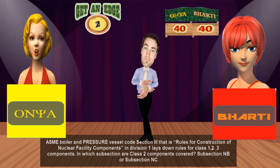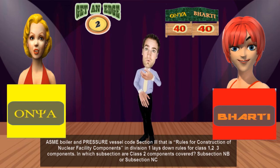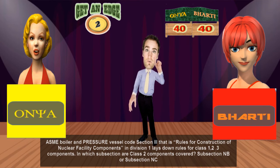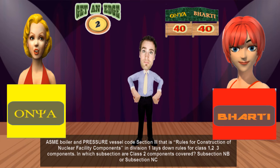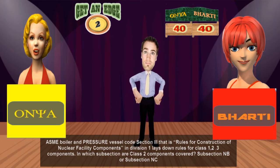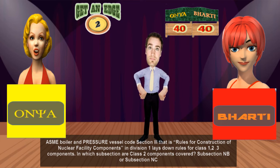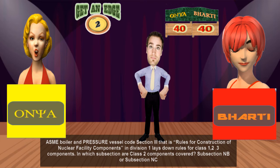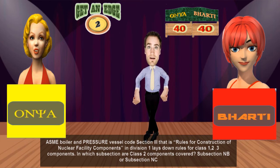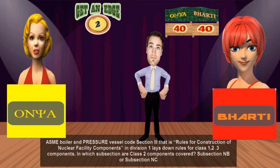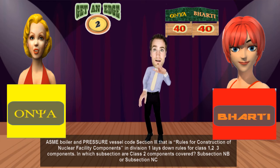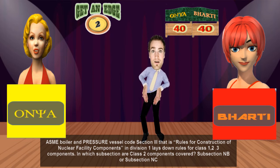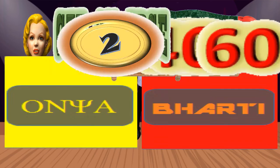Ms. Onya says she doesn't know the answer but must choose an option. Reasoning logically: ASME Section 3 Division 1 has class 1, 2, and 3 components with subdivisions NB, NC, and ND. She reasons NB should stand for class 2 components and goes with NB. However, she is wrong. NB covers class 1 components, NC covers class 2, and ND covers class 3 components. Ms. Onya loses points for the incorrect answer.